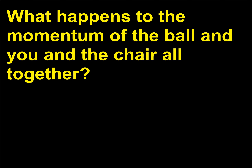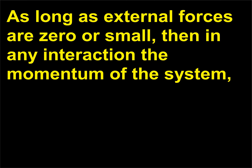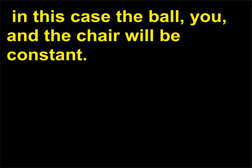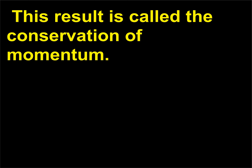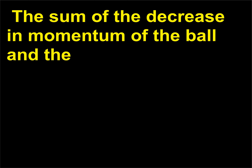What happens to the momentum of the ball and you and the chair all together? The momentum of the ball, you, and the chair will be constant. This result is called the conservation of momentum. The sum of the decrease in momentum of the ball and the increase in momentum of you and the chair will be zero.